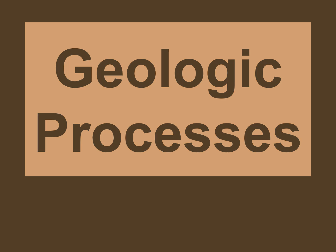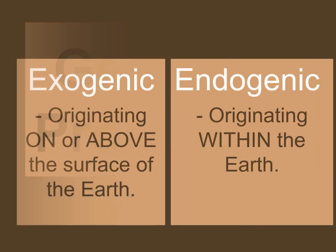There are two types of geologic processes: exogenic and endogenic. Today we are going to talk about only exogenic processes. Exogenic processes originate on or above the surface of the earth, while endogenic processes originate within the earth. Exogenic processes include geological phenomena and processes that originate externally to the earth's surface.